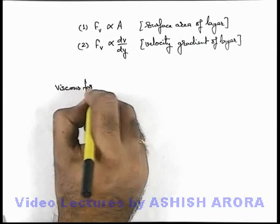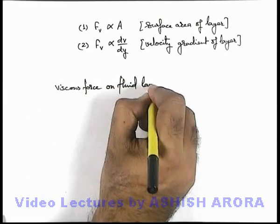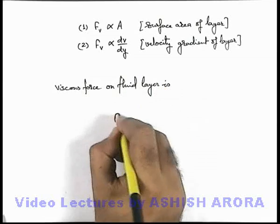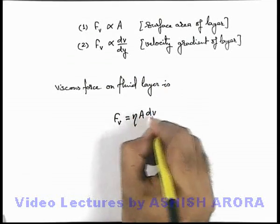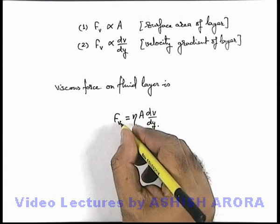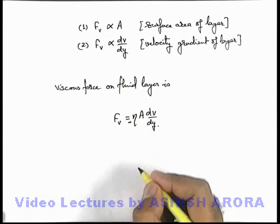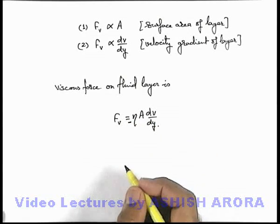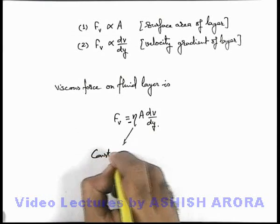Viscous force on fluid layer is, this can be written as Fv is equal to eta A dv over dy. More precisely, as viscous force acts opposite to the direction of motion, we must include a negative sign here if we are denoting it vectorially. Here this eta is the constant of proportionality.